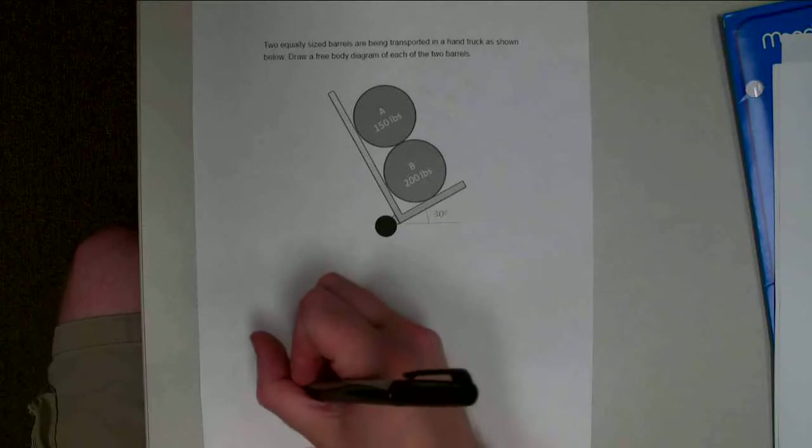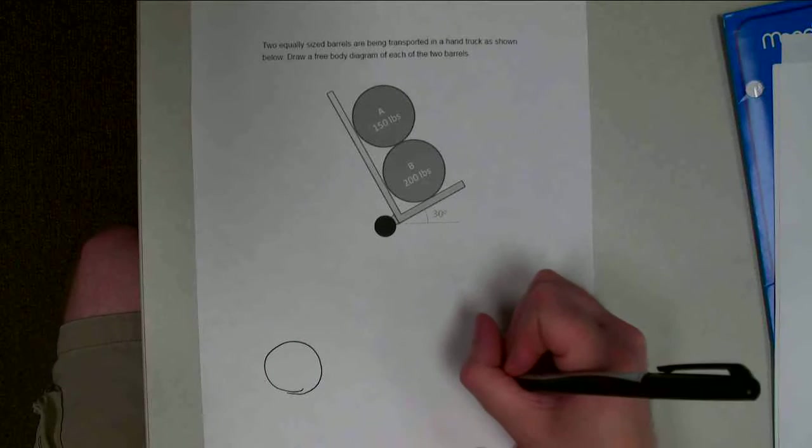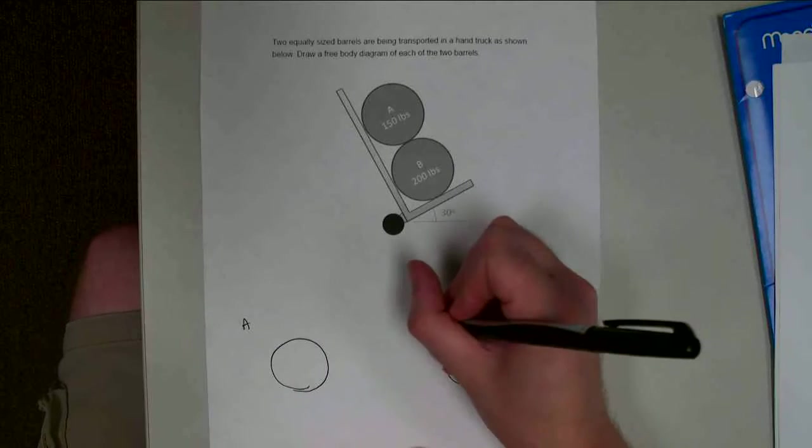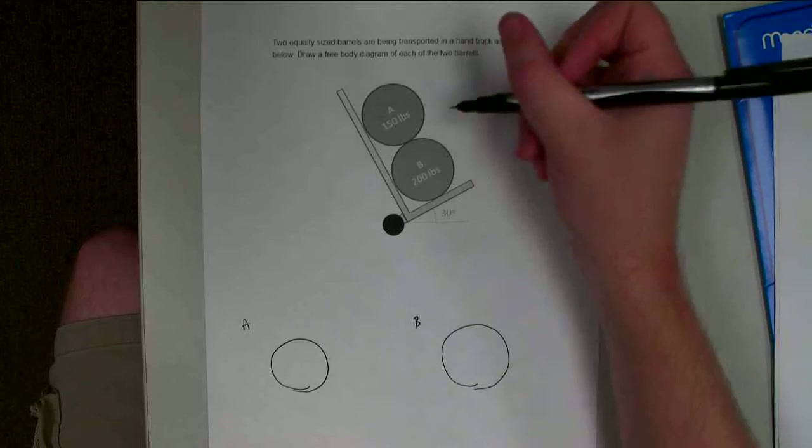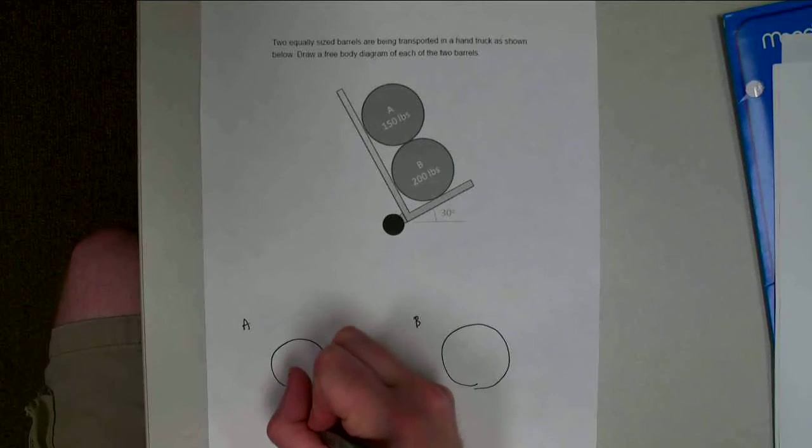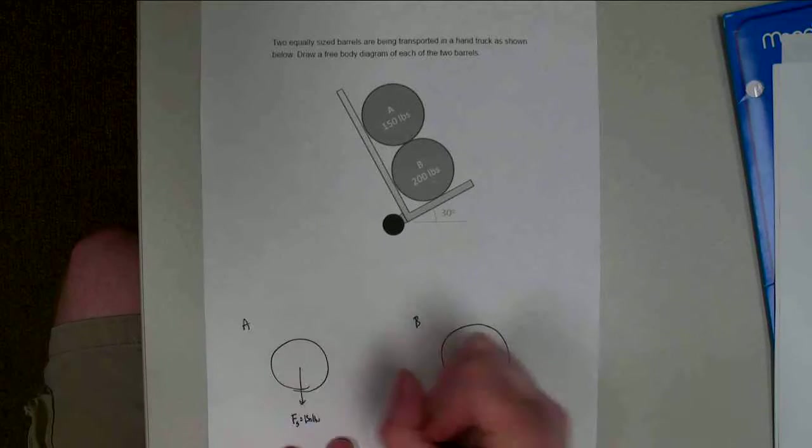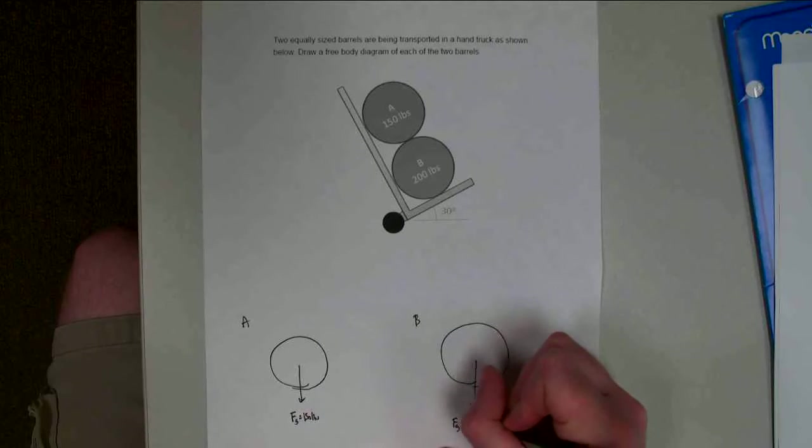And so we're going to have barrel A, and we're going to have barrel B. This one is A, this one is B, those should be the same size, and we're going to need to start drawing in the forces. So each one of them has a weight force, so we're going to have FG, and the top one is 150 pounds, and barrel B, FG equals 200 pounds.